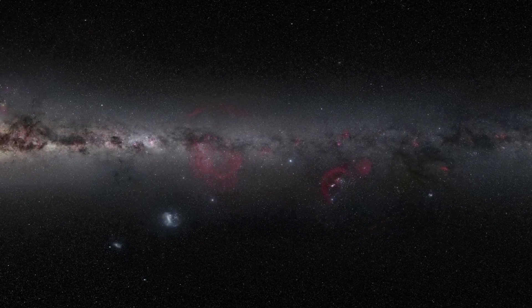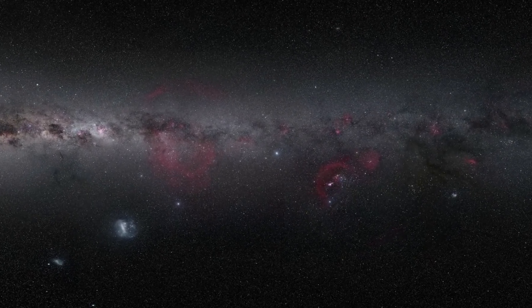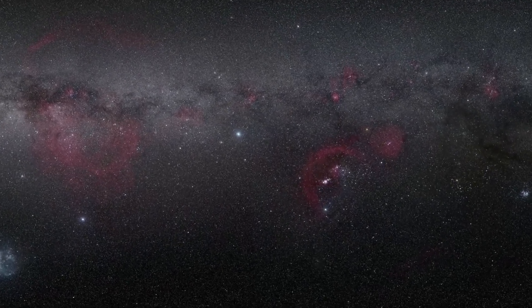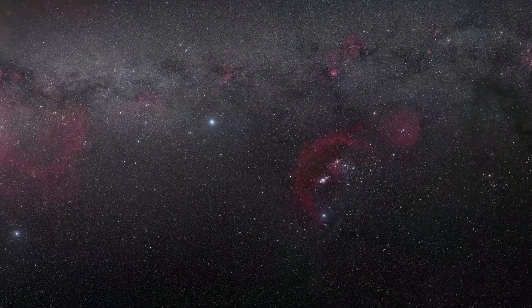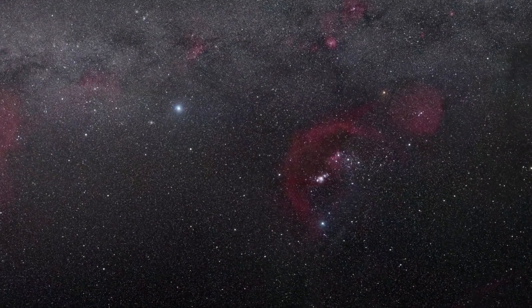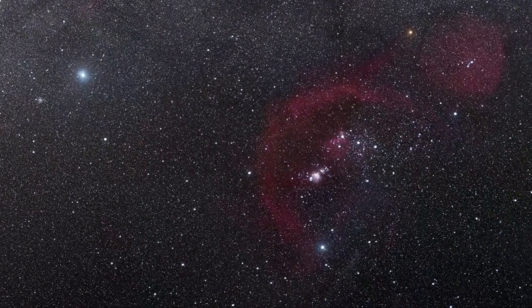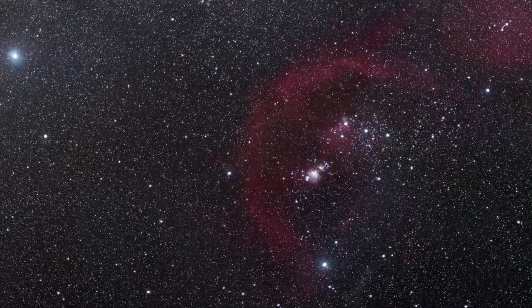Emission nebulae are often mixed with reflection nebulae. This is true of the Orion Nebula, also known as M42. The glowing gas of M42 surrounds hot young stars located at the edge of a huge molecular cloud, about 1,500 light years from Earth.